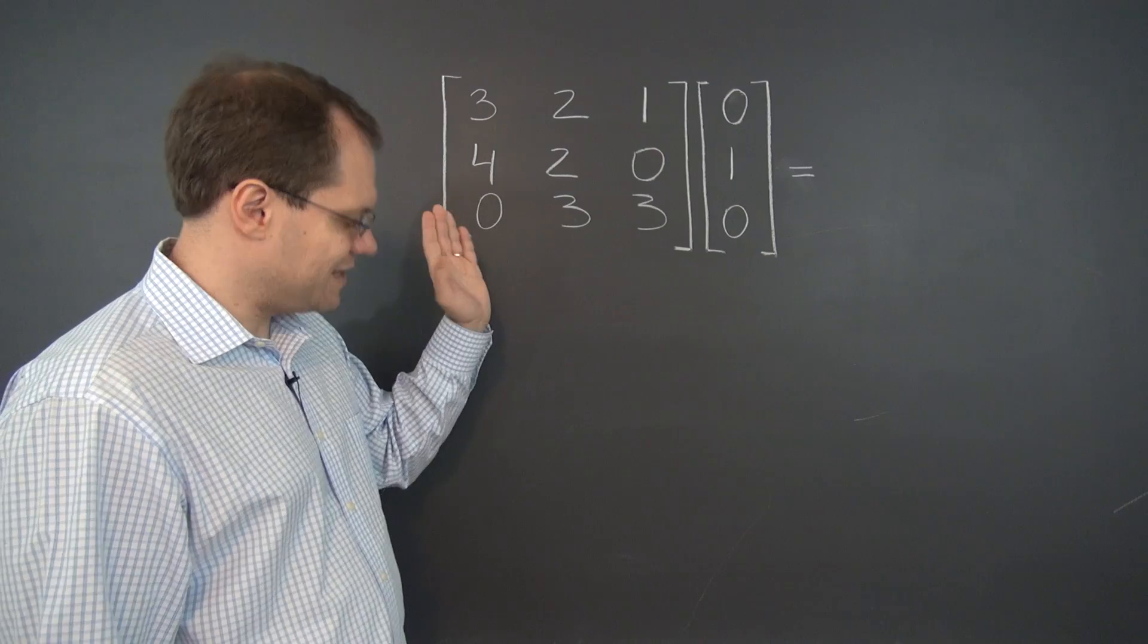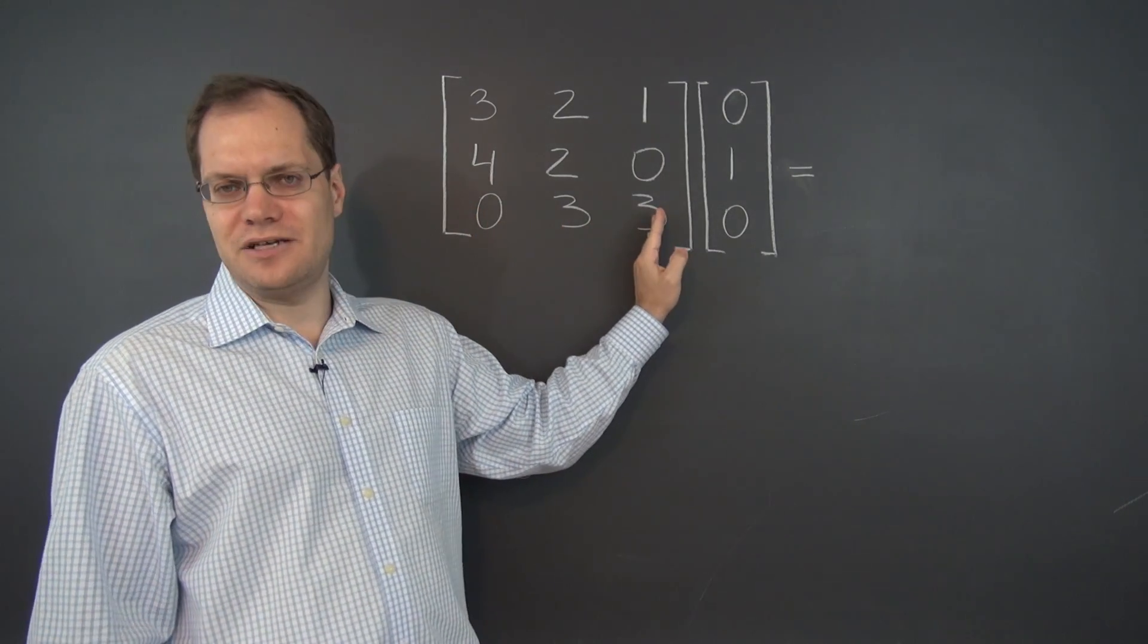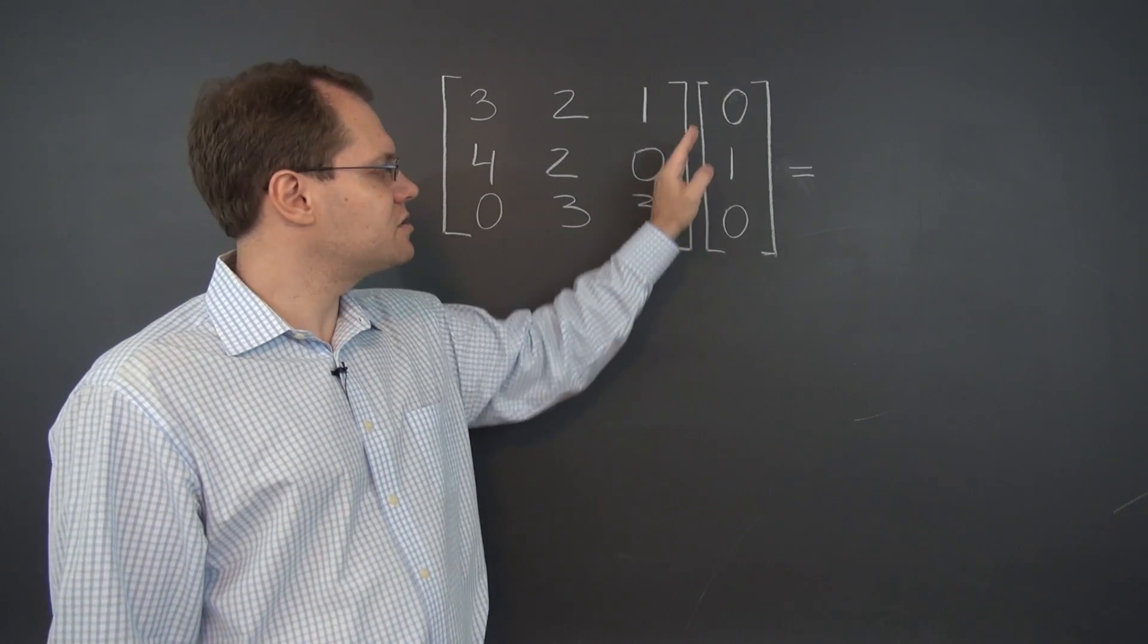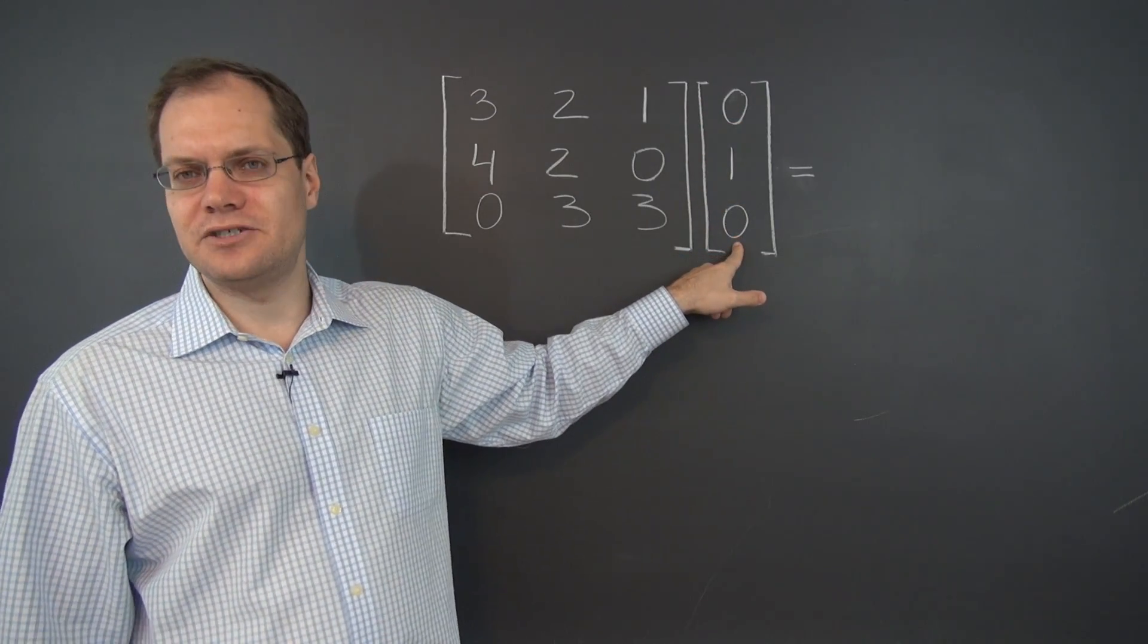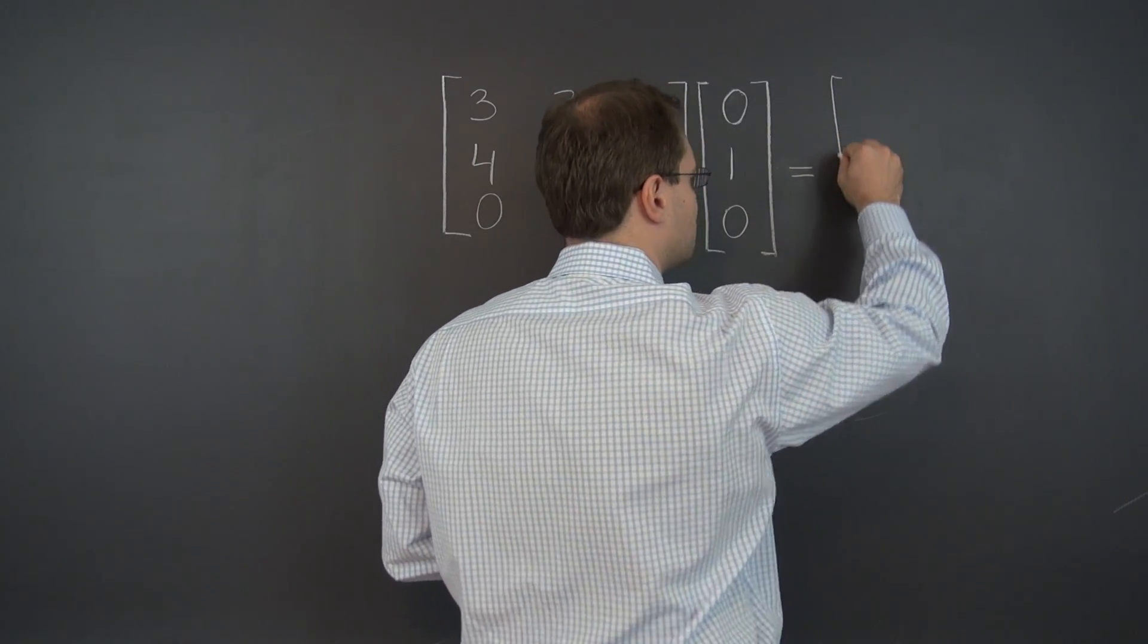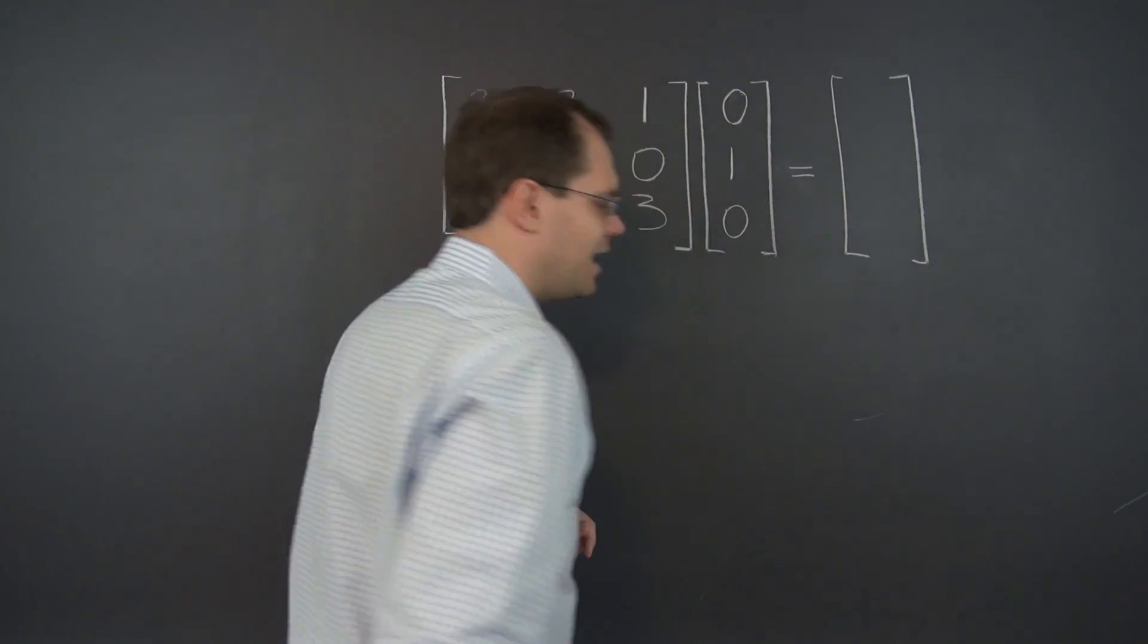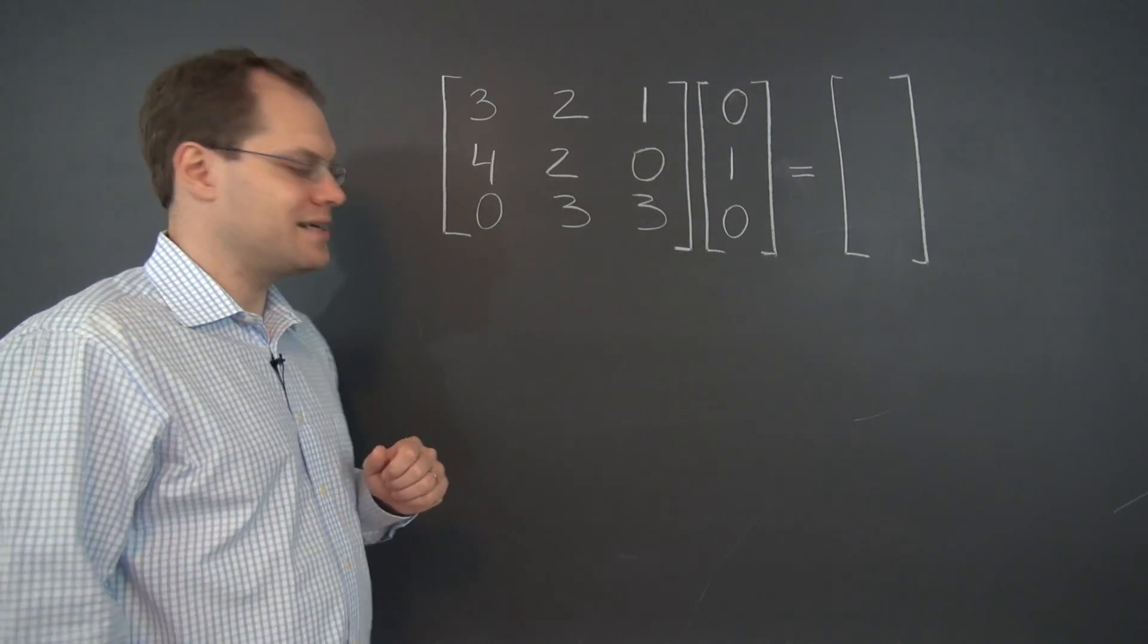Well, it's inviting you to find the linear combination of the columns of this matrix where their coefficients come from this matrix. So it will be a single linear combination, so the answer will be once again a three by one matrix. And let's write out what that linear combination is.